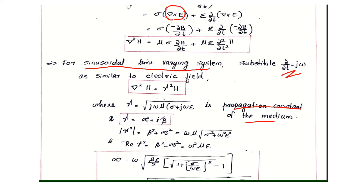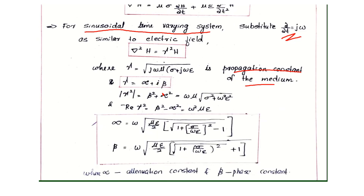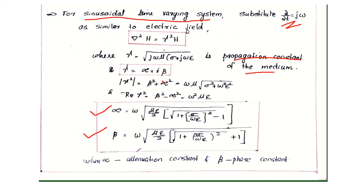We will get the values of alpha and beta: alpha equals omega times the square root of mu epsilon over 2, times the square root of 1 plus (sigma over omega epsilon) squared minus 1. Similarly, beta equals the same expression but with plus 1, where alpha is the attenuation constant and beta is the phase constant. Thank you.